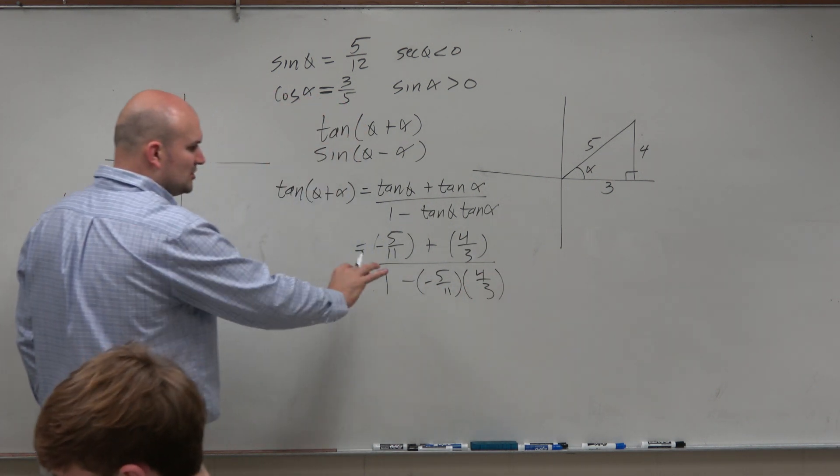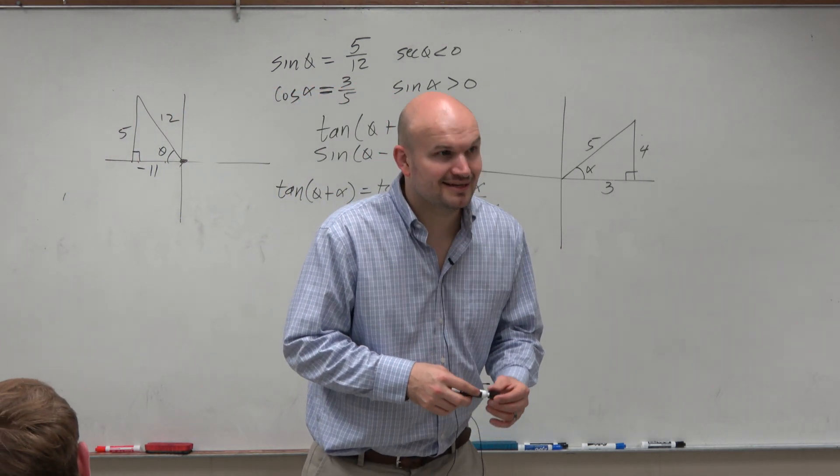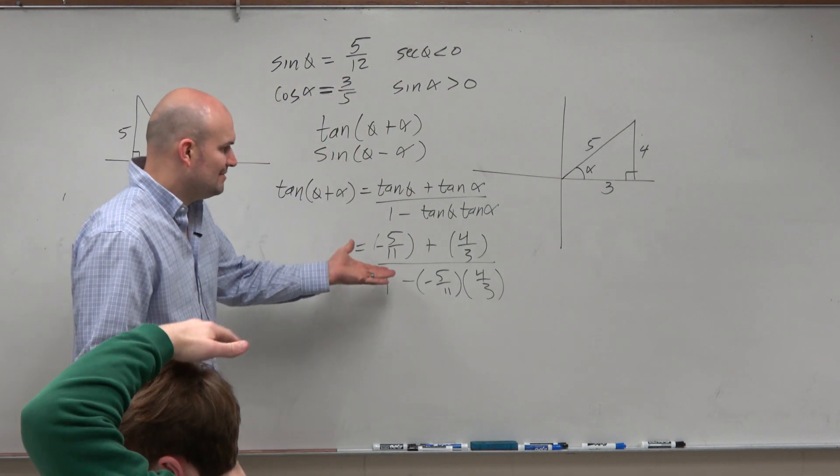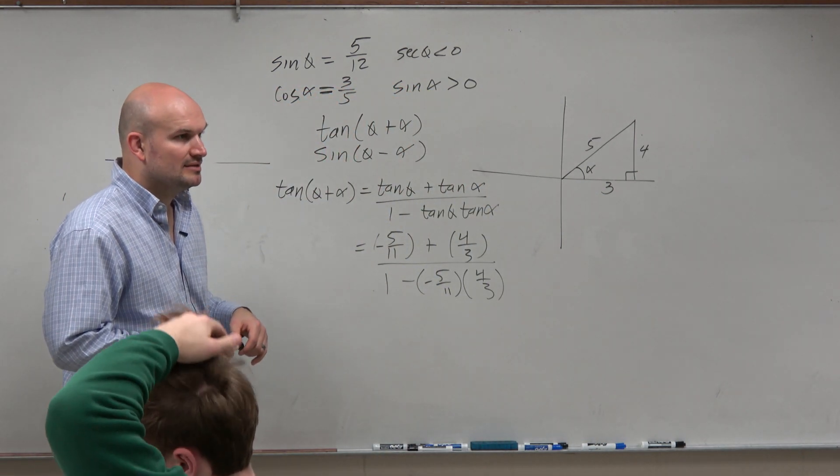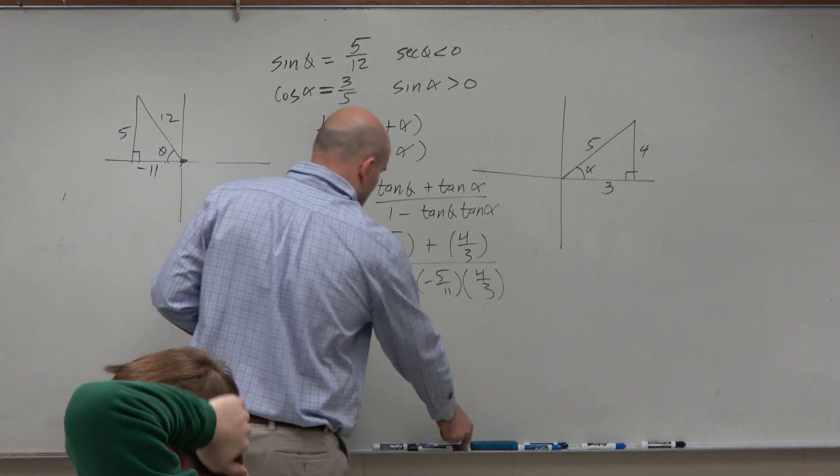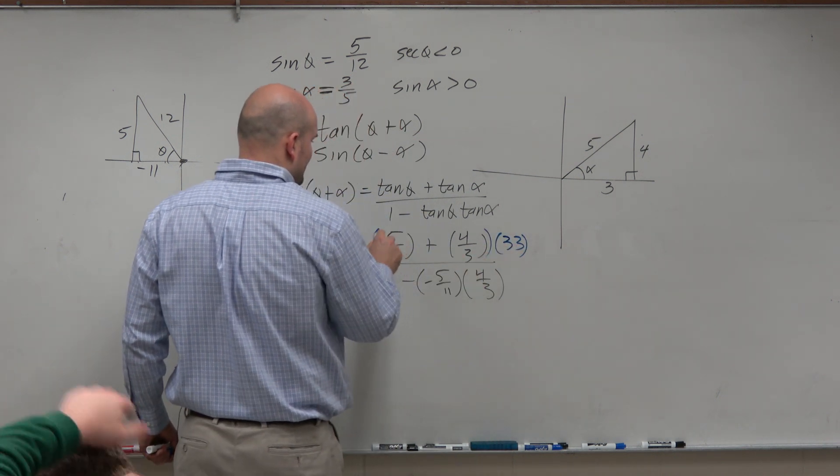Now, before you start to multiply these, we recognize this is a complex fraction again. Can't we just multiply by the common denominator, which would be 3 times 11, or 33? So let's multiply the top and the bottom by 33 to get rid of all these fractions.